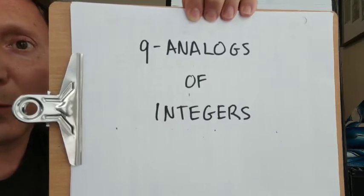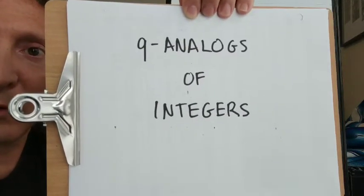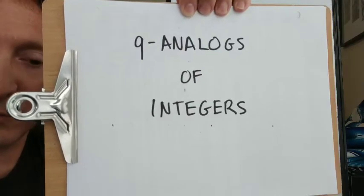So the generating function for Mahonian statistics involves q analogs of integers, or sometimes quantum analogs of integers that are called.